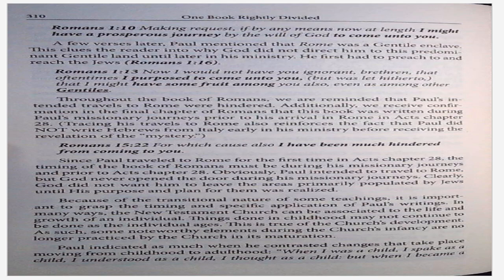Since Paul traveled to Rome for the first time in Acts chapter 28, the timing of the book of Romans must be during his missionary journeys and prior to Acts chapter 28. Obviously, Paul intended to travel to Rome, but God never opened the door during his missionary journeys. Clearly, God did not want him to leave the areas primarily populated by Jews until his purpose and plan for them was realized. Because of the transitional nature of some teachings, it is important to grasp the timing and specific application of Paul's writings. In many ways, the New Testament church can be associated to the life and growth of an individual. Things done in childhood may not continue to be done as the individual ages. This is true of the church's development. Some noteworthy elements during the church's infancy are no longer practiced by the church in its maturation. Paul indicated as much when he contrasted changes that take place moving from childhood to adulthood.